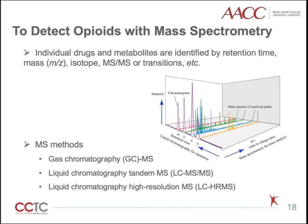Mass spectrometry is a technique that ionizes, separates, and measures the mass-to-charge ratio (m/z) of molecules for chemical identification and quantification. Compared to immunoassay, mass spec identifies individual drugs and metabolites by retention time, mass, isotope, MS/MS transitions. Different mass spec methods have been developed for opiate detection.